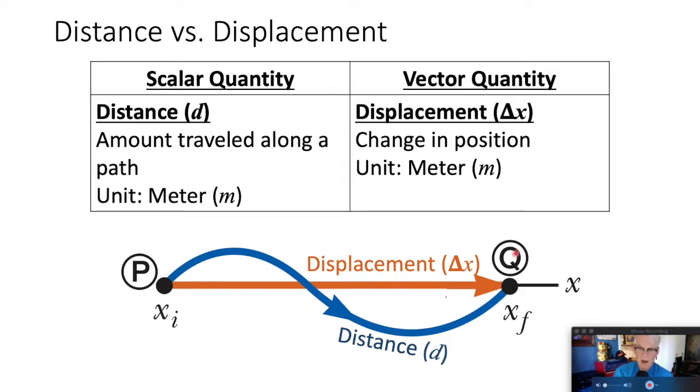The length of the arrow represents the magnitude. In our example, we are showing the displacement between point P and point Q.